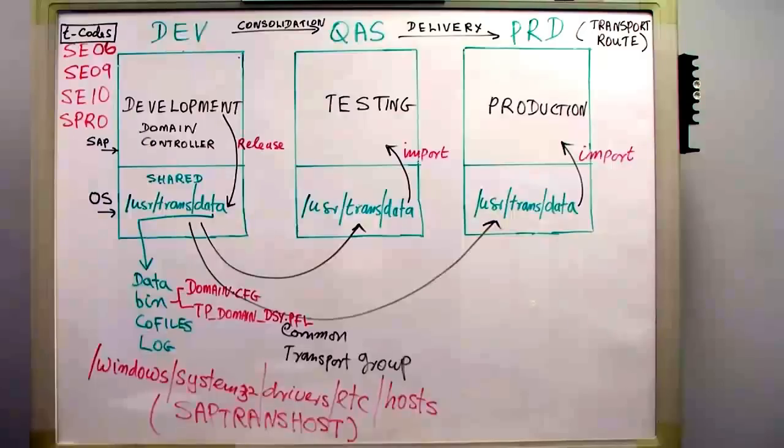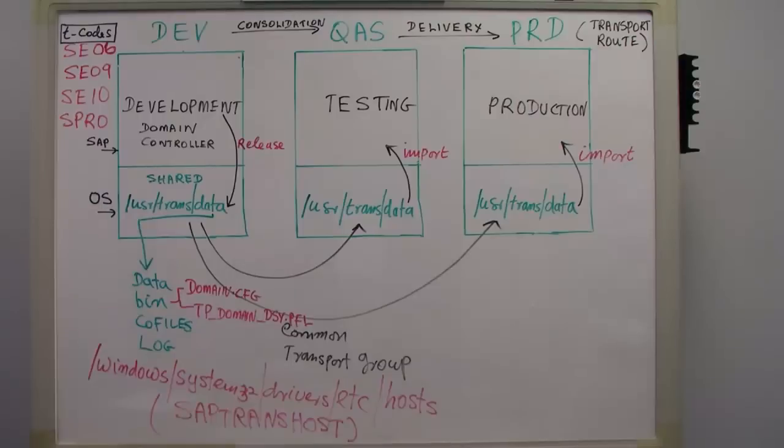Another thing I want to explain: in the Windows system32/drivers/etc/hosts file, I have to make an entry for saptranshost and put the IP address of this machine, because this is going to be the transport host that is shared with other systems.